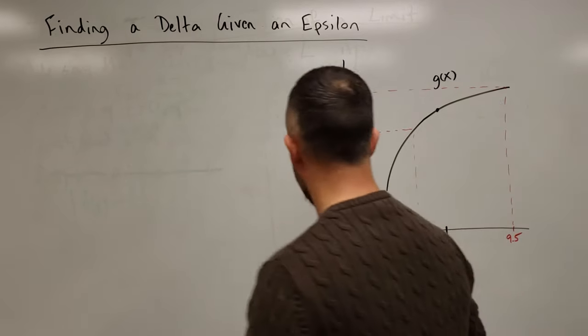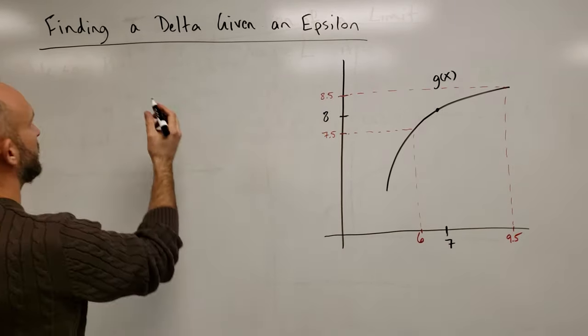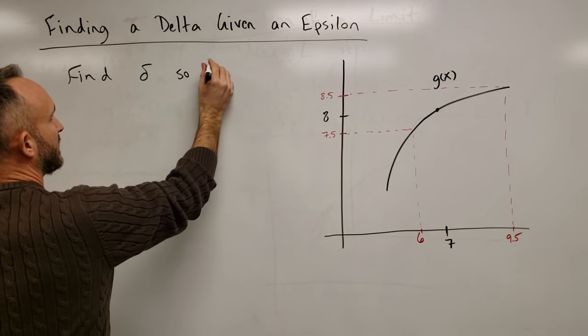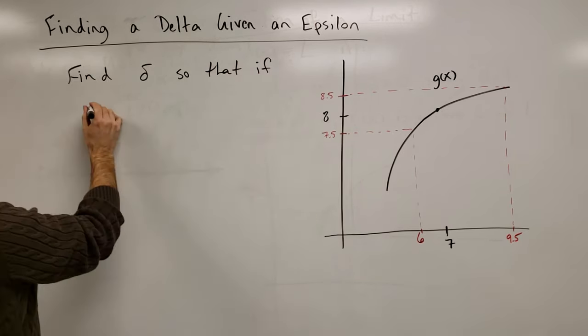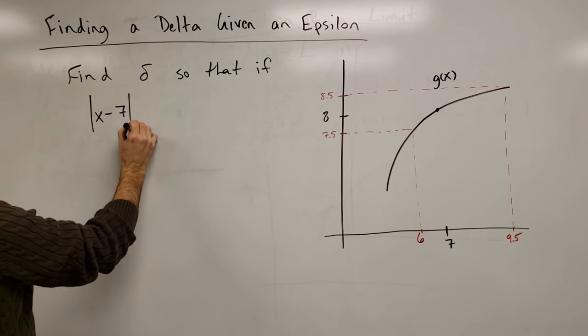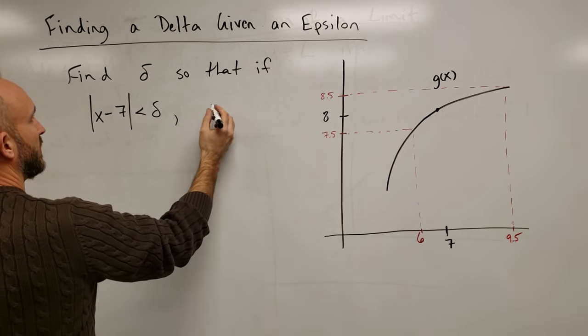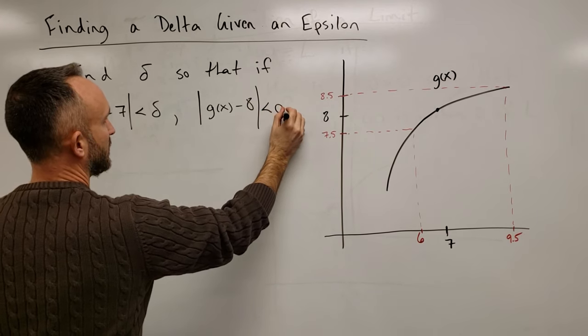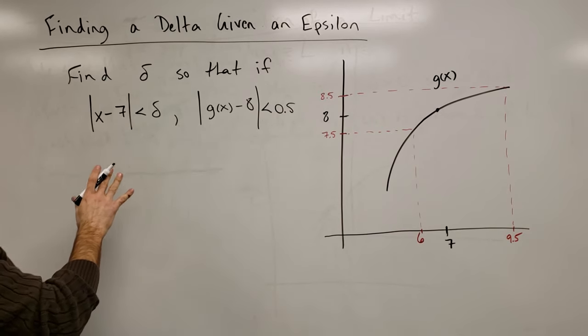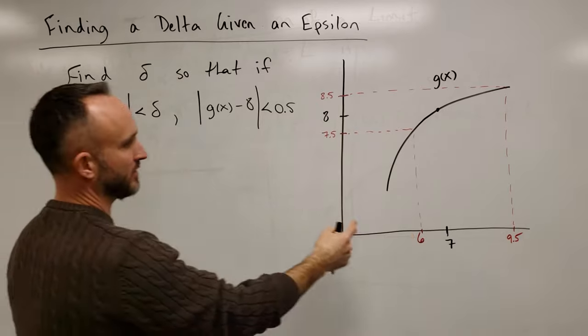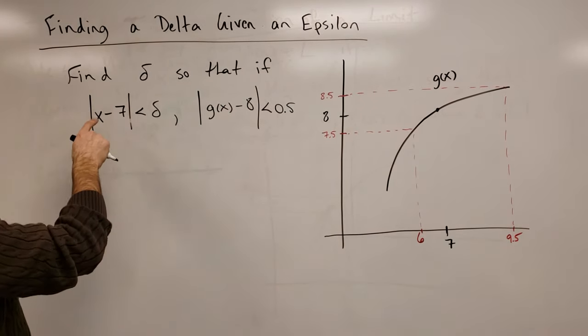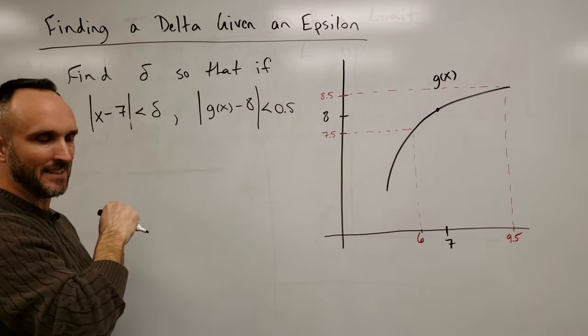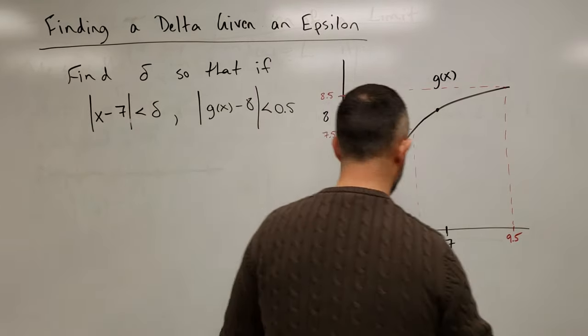Simple enough. What we want to do is find delta so that if the absolute value of x minus 7 is less than that delta, the absolute value of g of x minus 8 is less than 0.5. So, let's start getting a handle on what's happening here, what the question is.